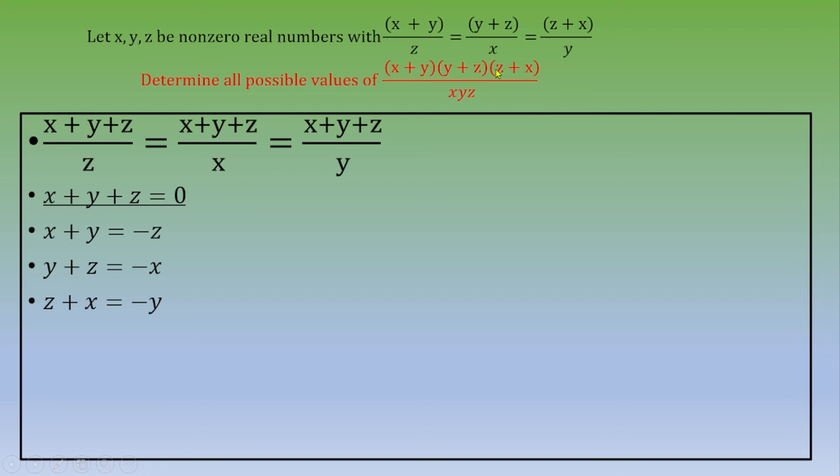Then to find the value of this quantity, we just plug in and get (-z)(-x)(-y) over xyz, which equals -xyz over xyz. When you cancel out, you end up with negative one.